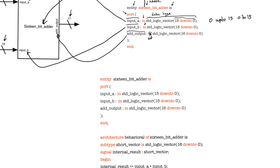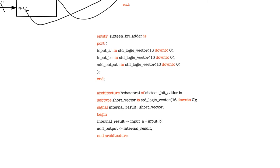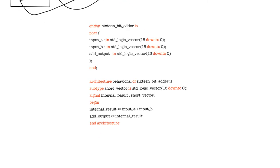Every design has to consist of at least an entity and an architecture. This is a complete design — it can go into a single file, or it can share a file with other designs, but it's better to have each design in a separate file in VHDL. The architecture describes how the entity is implemented on the inside.